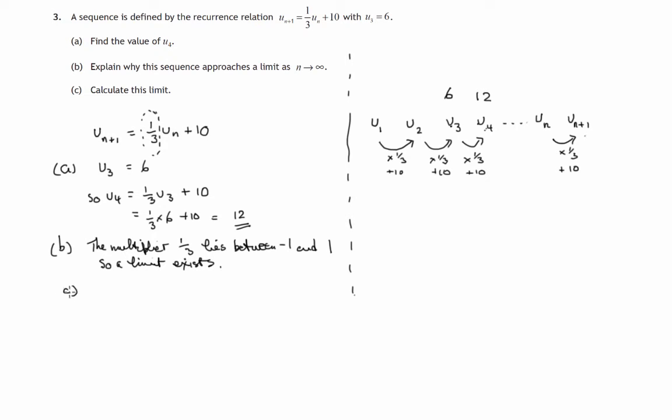And in the last one we're asked to calculate this limit, so let's suppose the limit is L. Now that means that along this sequence of numbers, suppose we eventually reach this number L, then the magic of that number L, because it's a limit, means that we'll be stuck at that. If we carry out this procedure of multiplying by a third and adding ten each time, we'll get exactly the same number out. That's what the limit means.